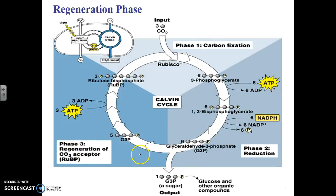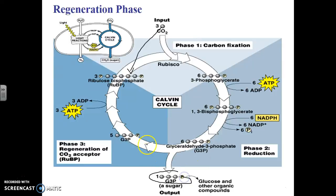In the last phase, which is the regeneration of the carbon dioxide receptor RU-BP — which carbon dioxide was added to in the first place — we need to regenerate that. Of these six G3P molecules we just made, only one is used to make glucose. The other five are used to regenerate RU-BP. So five G3P, using the energy of ATP made from the light reactions, go through several enzymatic reactions to regenerate the RU-BP that started this cycle.